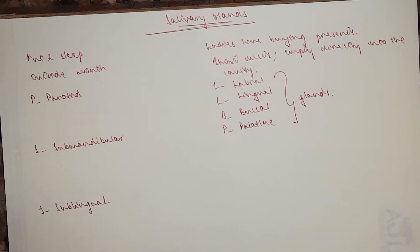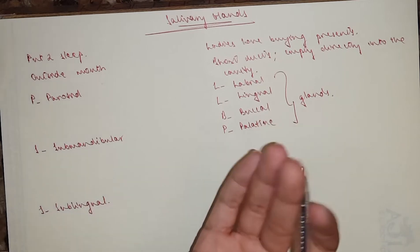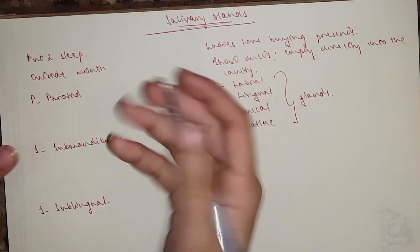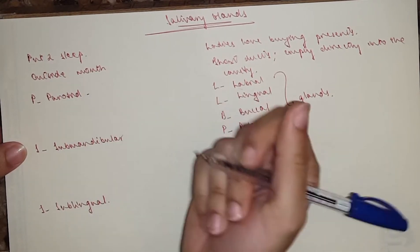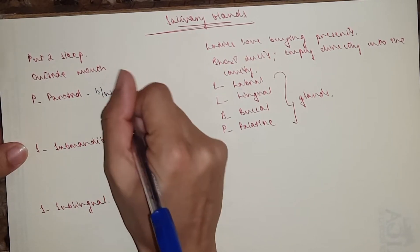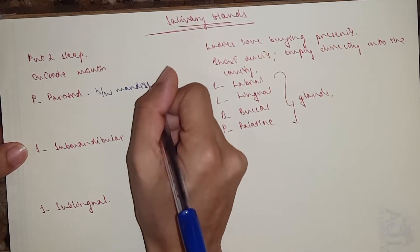Now there are a few differences between them, but the duct system is the same. So they have intercalated ducts and interlobular ducts. That's the same, but there are just a few differences. The location is one. For the parotid, it's below the external acoustic meatus between the mandible and the sternocleidomastoid muscle.